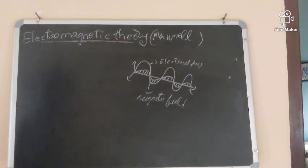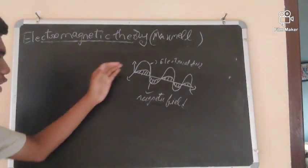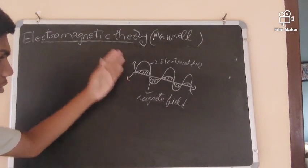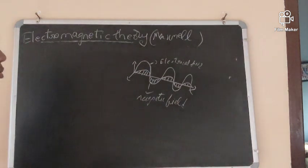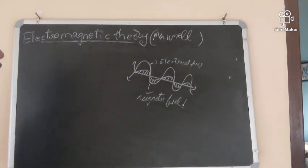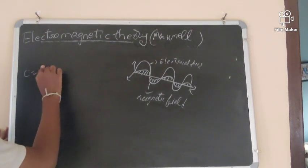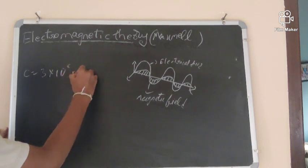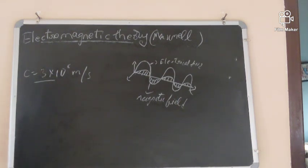The velocity of light is constant. C is equal to 3 × 10⁸ meters per second. They travel with the same velocity in any medium we take.